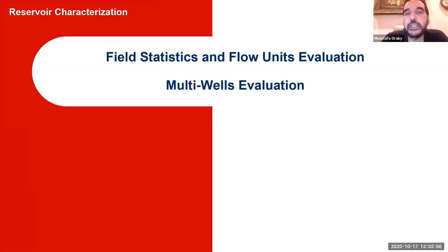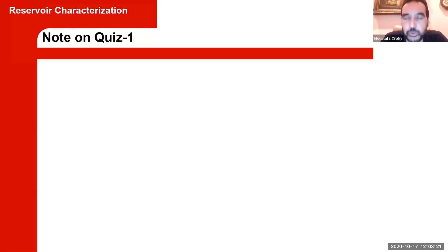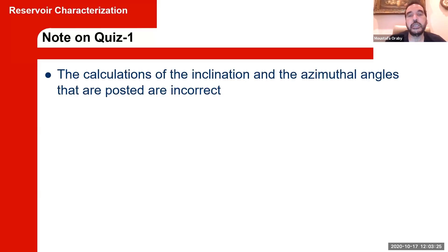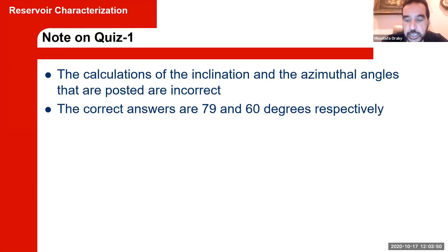Today's presentation will cover field statistics and flow units evaluation on multi-wells. Before I start, there was a note about quiz one. Multiple of you found there was a mistake in the answers to the last question. That's true — I took a look at it and I apologize. The right answers are: the inclination angle is 79 degrees and the azimuth angle is 60 degrees. If you came up with those two numbers, that's correct. It will be taken care of and it's not going to affect your grades.